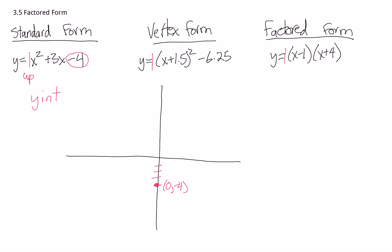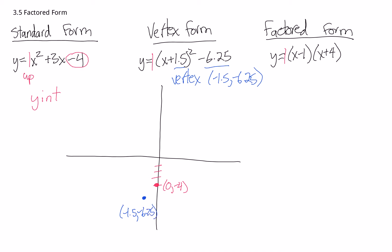Vertex form gives us the vertex from the two numbers in the equation. We take the opposite of the first number, so the vertex is at negative 1.5, and the same as the second number, giving us negative 6.25. So our vertex is at (-1.5, -6.25), and the graph is a U-shape opening upward.